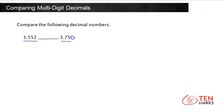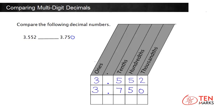To compare the decimal numbers, first place them in a place value chart. Then we'll check the digits in each place one by one. Look at the ones place. The ones digits in both numbers are 3. They are equal, so move on.